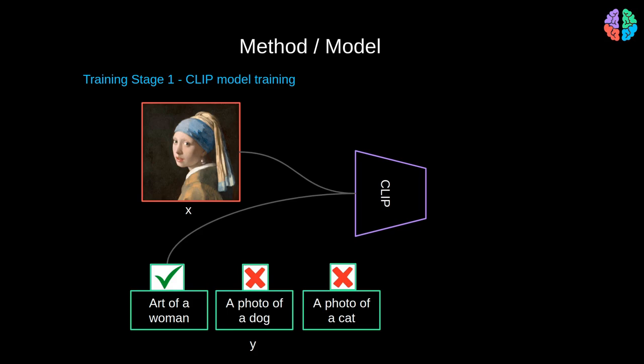As a result, it gives as output the embeddings or the feature representations ZI and ZT corresponding to the image and the text respectively. This paper, UnCLIP, uses the trained CLIP model to generate both image and text embeddings.